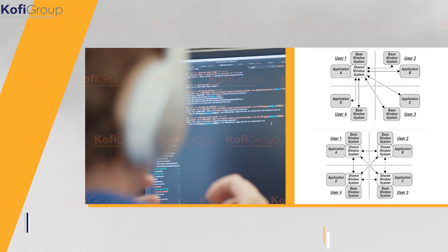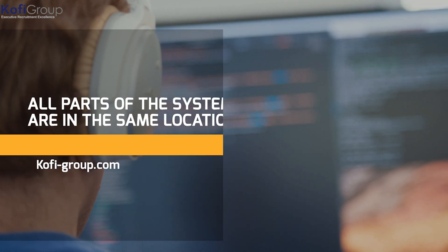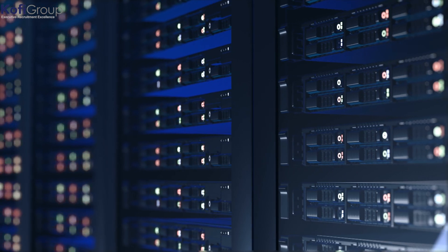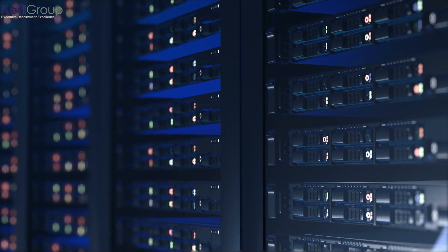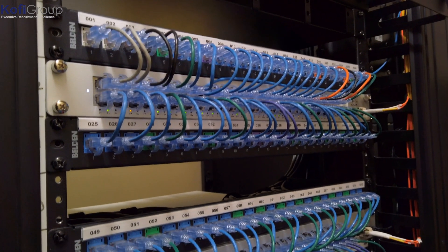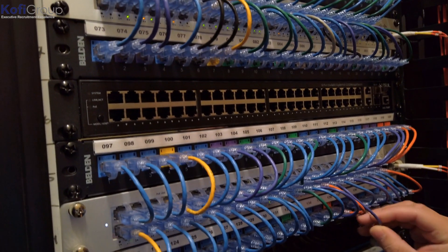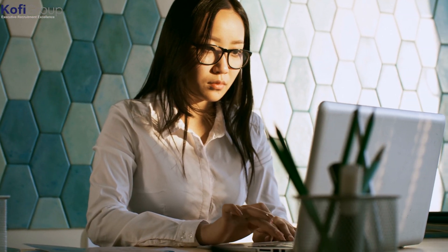What is a non-distributed system? Think old-school, dinosaur-era monolithic architecture: a single unified system that is extremely basic in its operation. All parts of the system are in the same location, which is the main criteria for being deemed non-distributed. Monolithic systems tick this box, as the database and server-side application that processes requests, executes domain-specific logic, and retrieves and updates data are all in the same place.